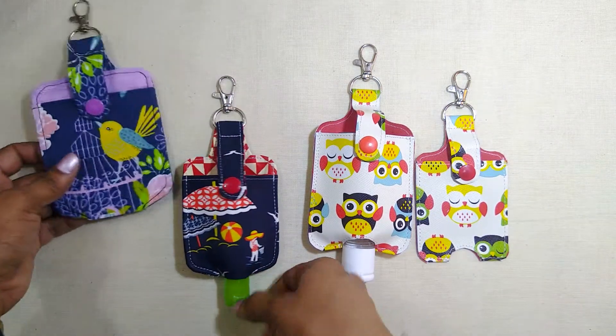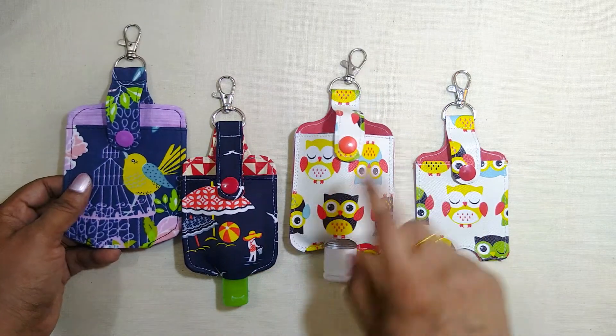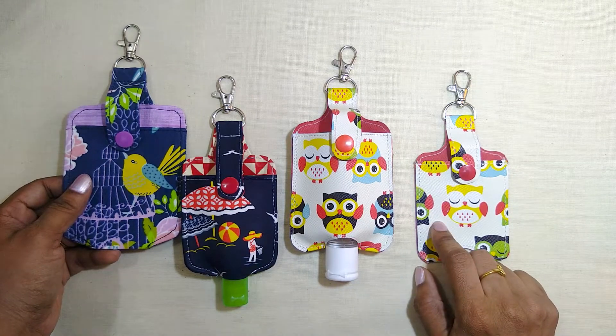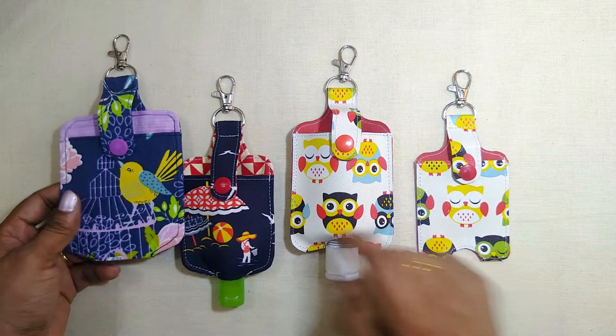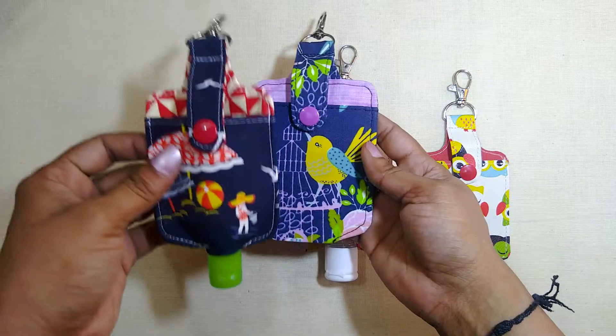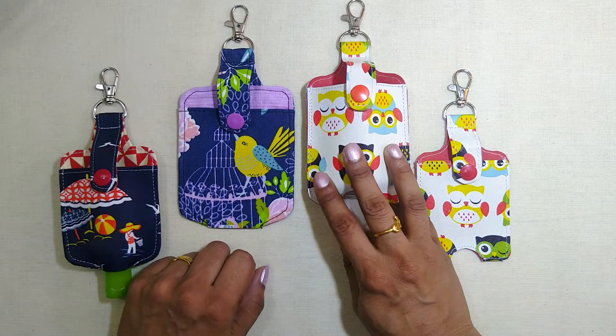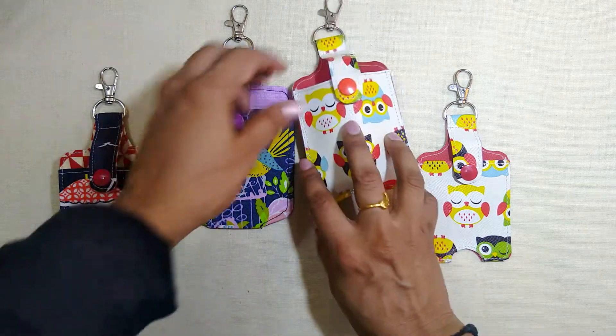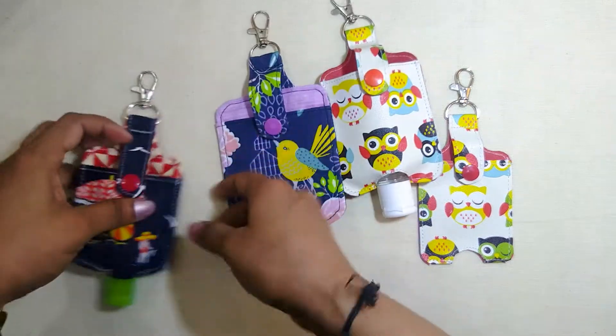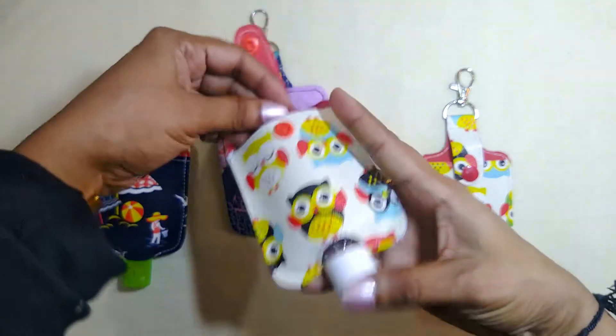Hi, today we are going to be making the Ava sanitizer pouch. It comes in two sizes, a large and a small, and in two versions: a fabric version and the vinyl version.